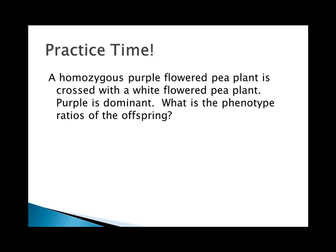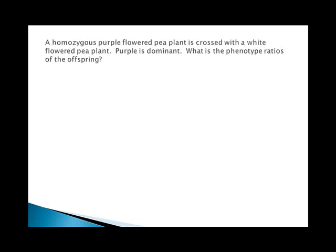Here's your practice: a homozygous purple pea plant is crossed with a white-flowered pea plant; purple is dominant. What are the phenotype ratios of the offspring? As a reminder, you always use the same letter — capital and lowercase — for the traits. You can't use P and W; you have to use P and p, or F and f.